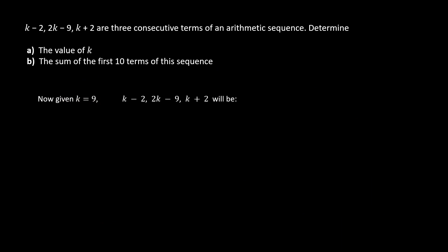Next, we substitute k equal to 9 in the three terms of the sequence to obtain their values. After simplification, we get the first term to be 7, the second 9, and the third 11.